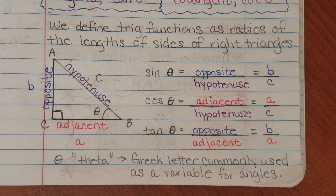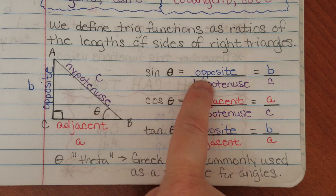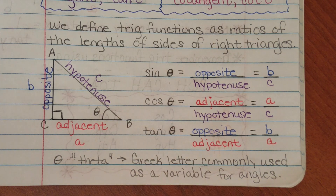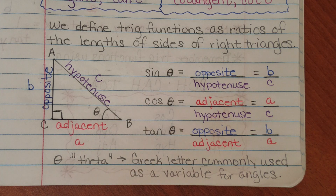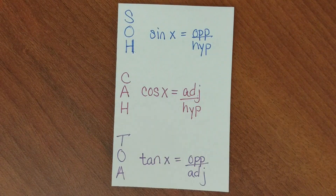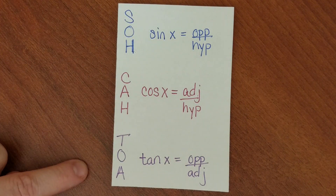Once you have your triangle labeled with the opposite and adjacent sides and hypotenuse, solving the problem is just a matter of plugging it into the right trig equation and using a little bit of algebra to solve for your variable. Another thing that you may have learned at this point is our mnemonic device for remembering how to define the three primary trig functions. This is SOHCAHTOA.